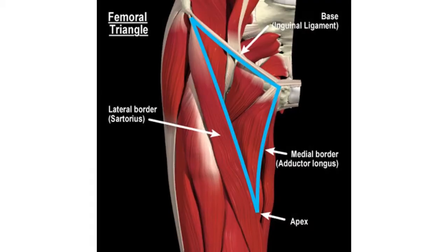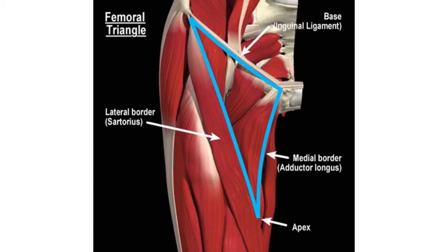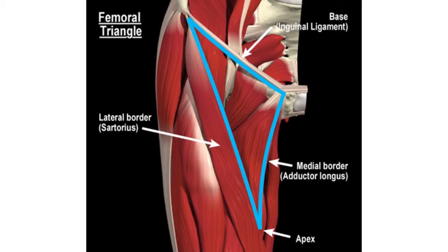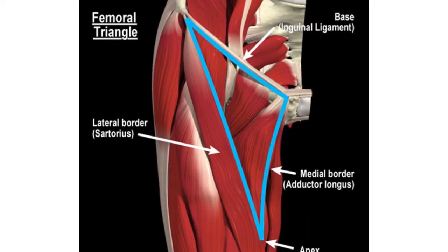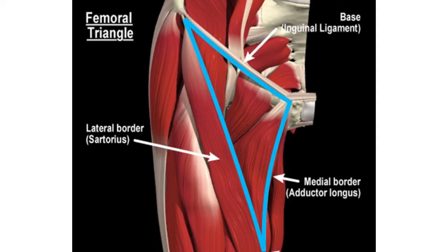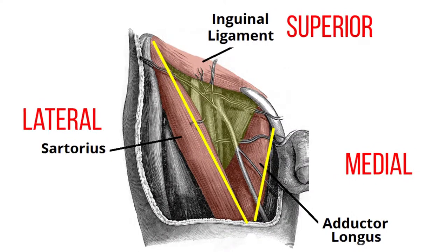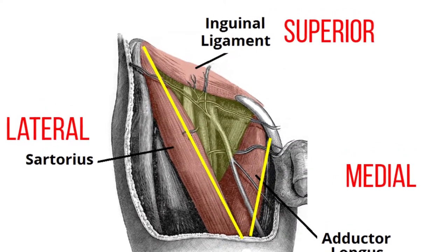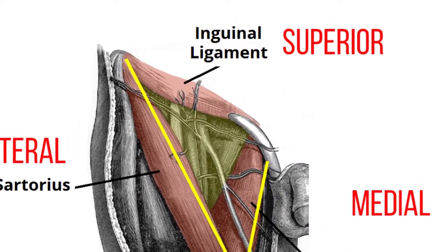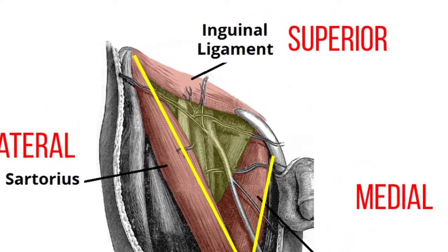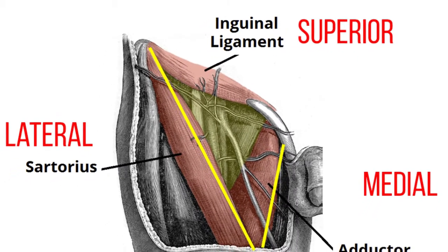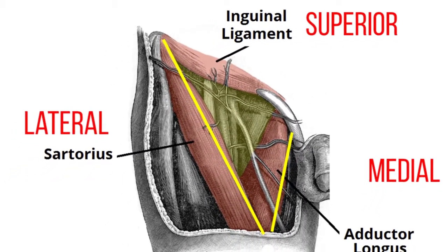As this area is a triangle, it has three borders: the superior border, the lateral border, and the medial border. The superior border is formed by the inguinal ligament, and the lateral border is formed by the medial border of the sartorius muscle.